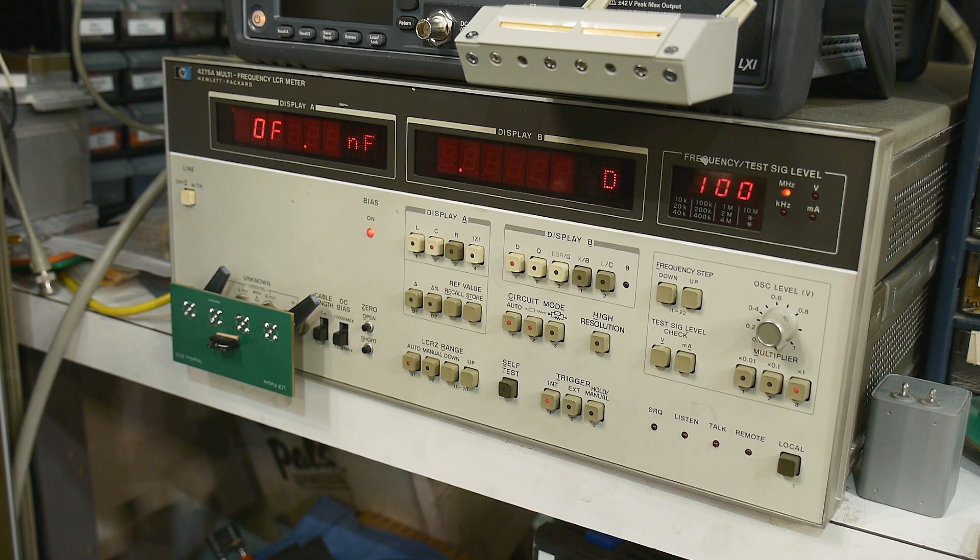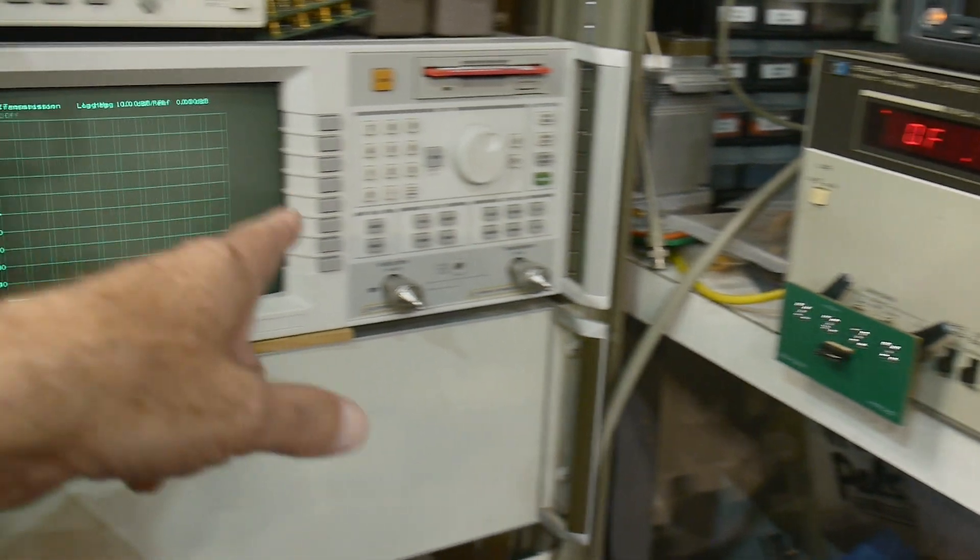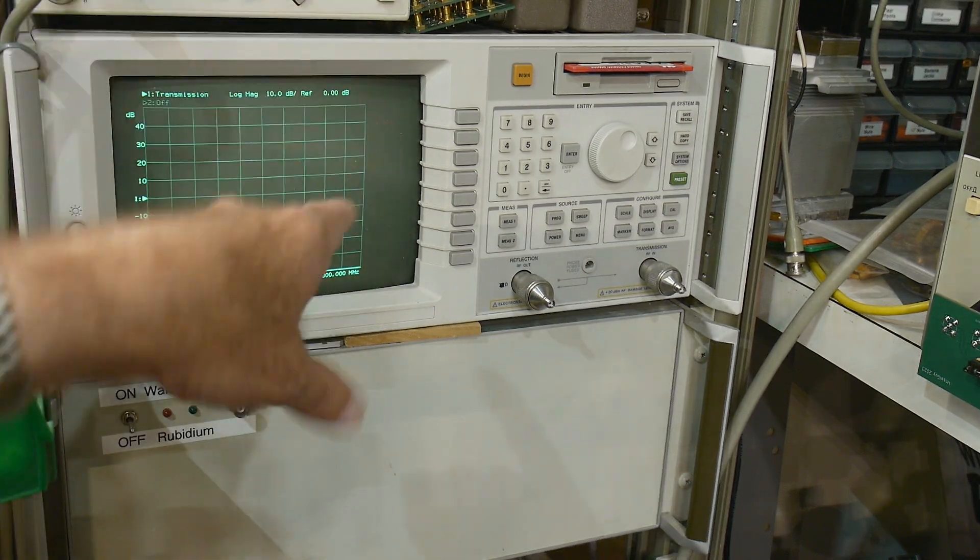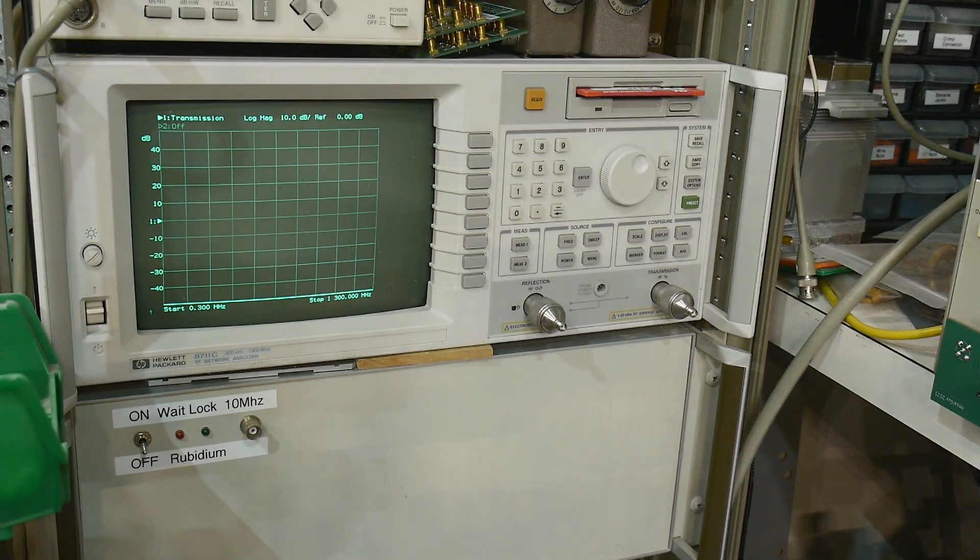So I need to connect an HPIB cable, which I have, and I need an HPIB controller, which I actually have right here, right next door. So this is my VNA. So I'm going to use my VNA to control DC bias on my LCR meter. And that's because this has iBasic built into it.